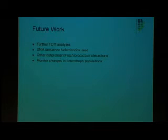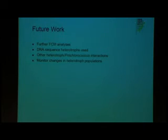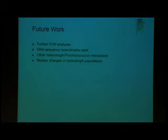What I'd like to do next is to continue my flow cytometry analyses, which were limited due to time constraints. I'd also like to DNA sequence the heterotrophs I used to find out what kind of cells they were. I'd also like to look at other heterotroph and Prochlorococcus interactions — specifically how the heterotroph populations changed over time — to see if lysis of the Prochlorococcus cells might have released nutrients for the heterotrophs to utilize, which would suggest other things about the relationship between heterotrophs, phage, and Prochlorococcus.